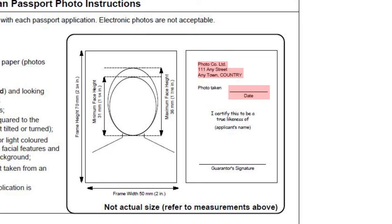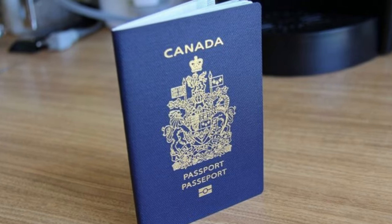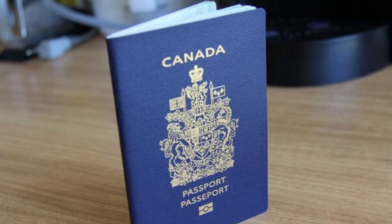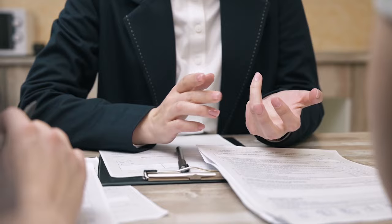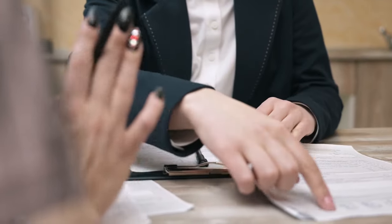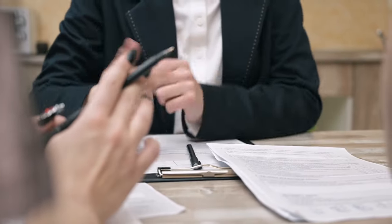The guarantor must also write on the back of one of the photos: 'I certify this to be a true likeness of your name and signature.' You must also have a valid Canadian passport or travel documents, if applicable, such as a refugee travel document or a certificate of identity.